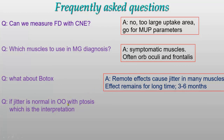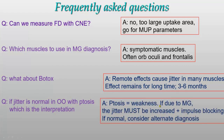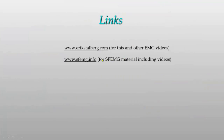If the jitter is normal in orbicularis oculi with ptosis, the interpretation is: ptosis is weakness, so if it is due to myasthenia the jitter must be increased — if normal, consider an alternate diagnosis. More information is available on a special homepage for single fiber EMG, which has videos and information about upcoming meetings. This concludes the theoretical discussion about jitter analysis with concentric needle electrode. Thank you for listening.